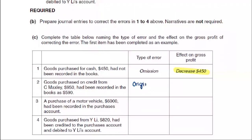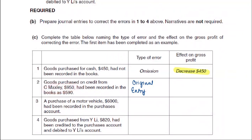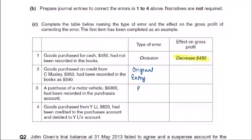So we have to write an error of original entry. The second question is: what impact will this error of original entry have? If we correct this, there are two things: C-Max is our trade payable — a liability. This entry, if corrected, means we debit purchases and credit C-Max, because the amount recorded was less.